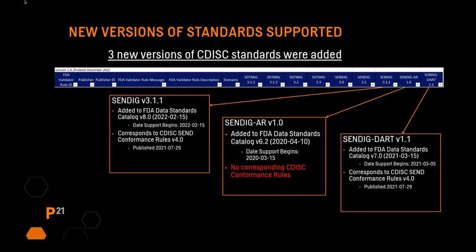The first new standard is SendIG version 3.1.1. This was added to the FDA's data standards catalog in February of 2022, and date support begins in February of 2022. The rules that go with this standard are from CDISC conformance rules for SEND version 4.0, which was published in July of 2021.